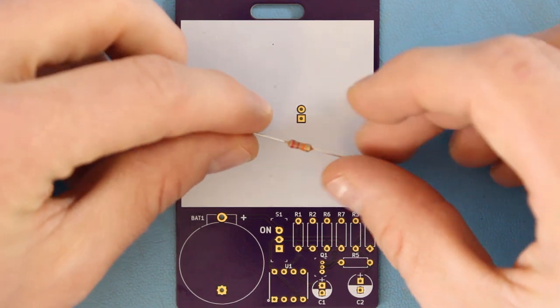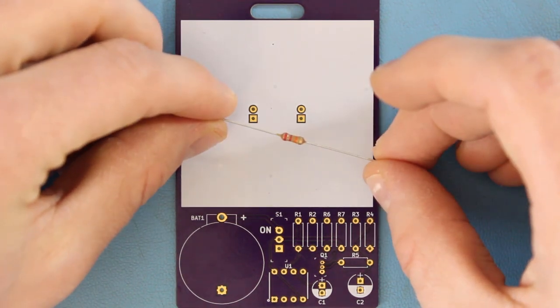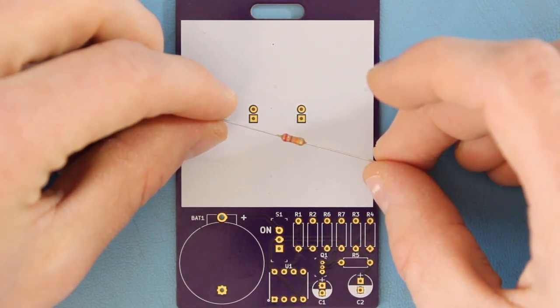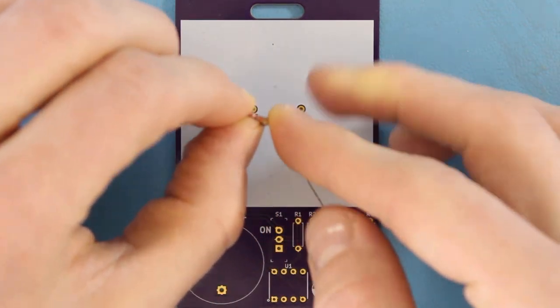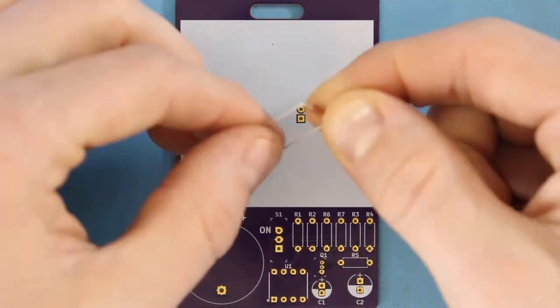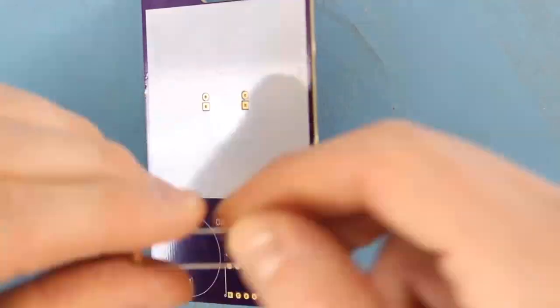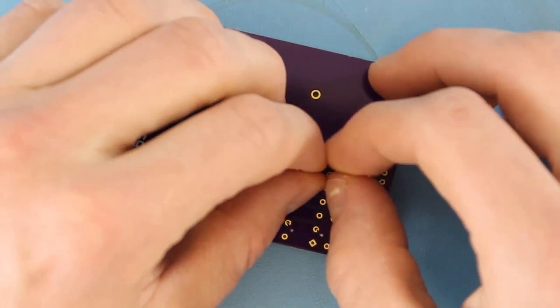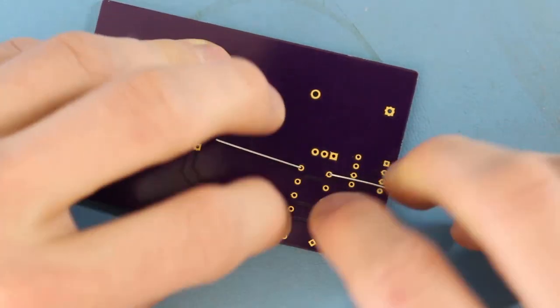To start, find R1 and R3, which should be your 22k ohm resistors. Bend the leads so that they can be inserted into the resistor footprints and place them into their respective spots. On the back side, bend the leads out so that the resistors stay in place.